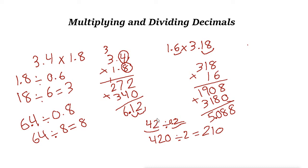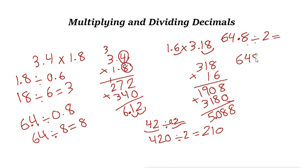Another example: 64.8 divided by 2. This time the divisor is already a whole number, so you don't need to change it. You could multiply both by 10 to get 648 divided by 20, or you can simply use long division: 64.8 divided by 2.